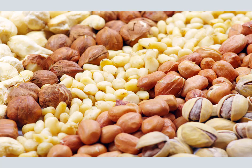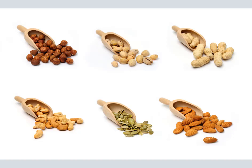Also in the order Fagales are hazel, filbert (Corylus), and hornbeam (Carpinus), in the family Betulaceae.